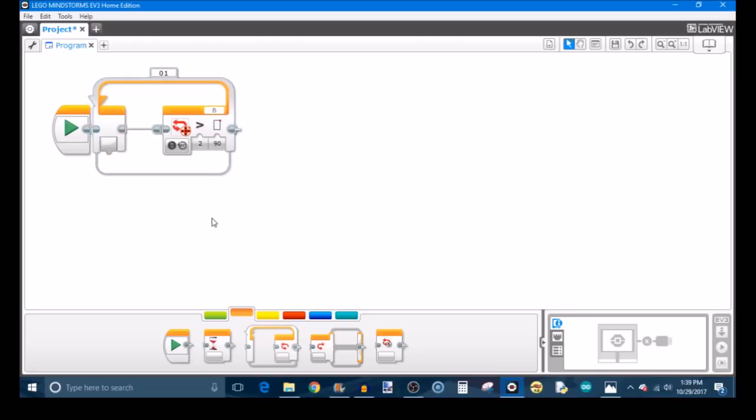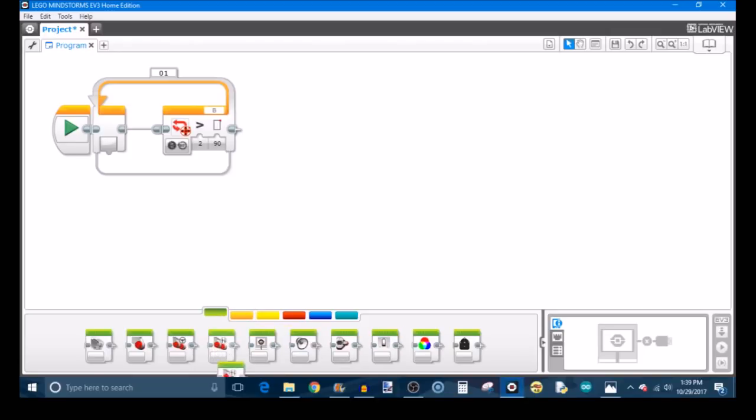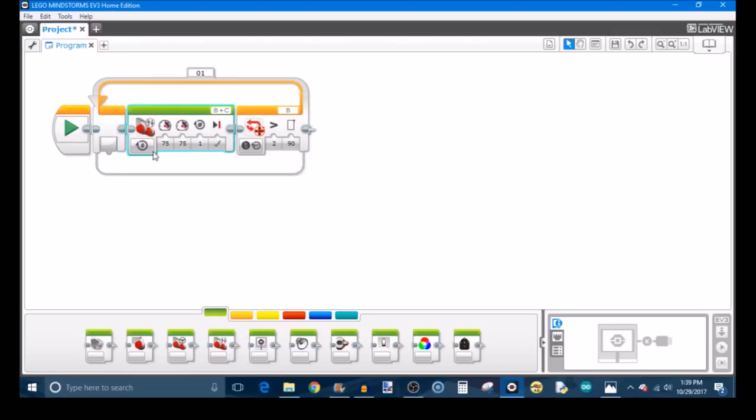We're going to finish setting this up in just a second. We're going to put another block, a move tank block within this loop, and we're just going to set this for on. We're going to choose a power that allows our robot to drive straight, so both of them are going to be the same power for both wheels. And we're going to choose a slow power so we have a lot of control over our robot. I'm going to choose 25 percent for my robot.